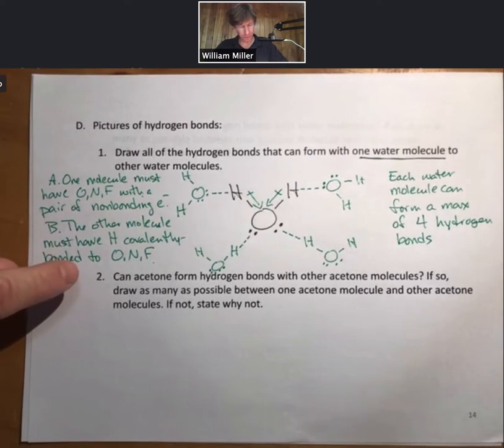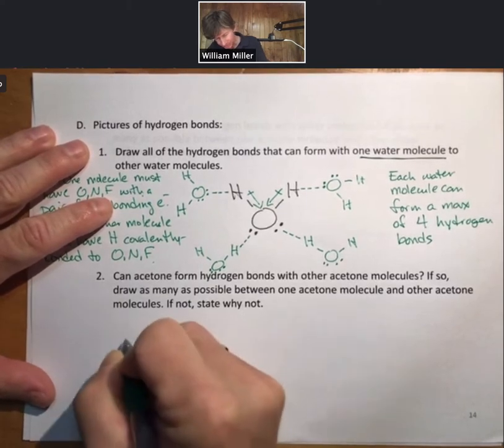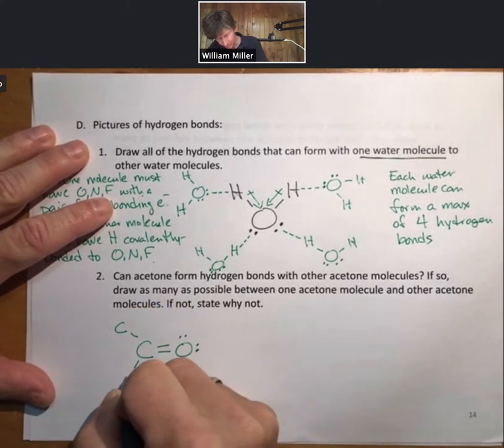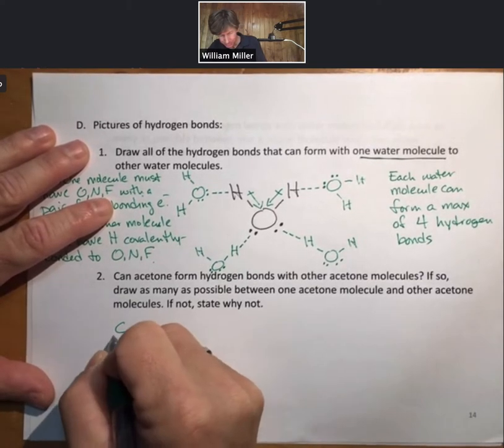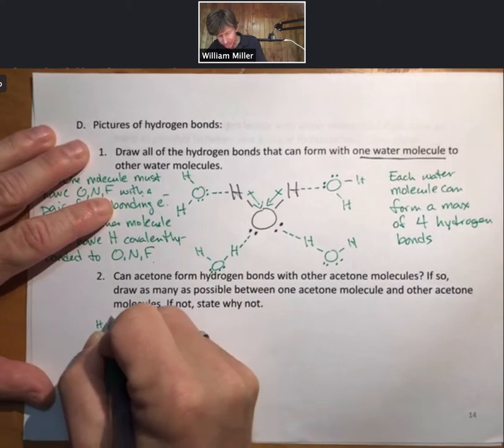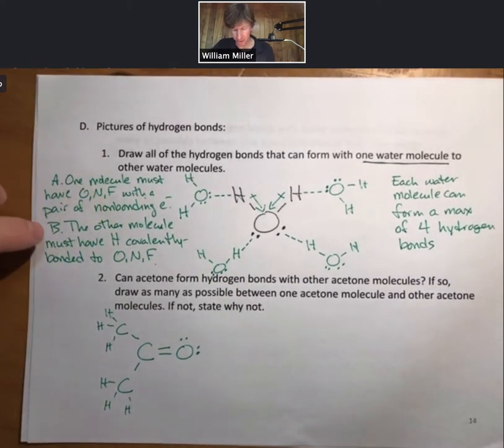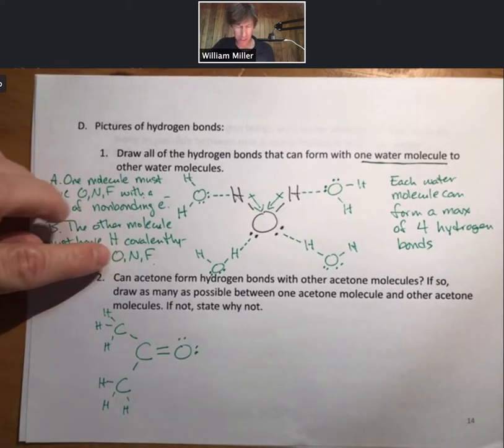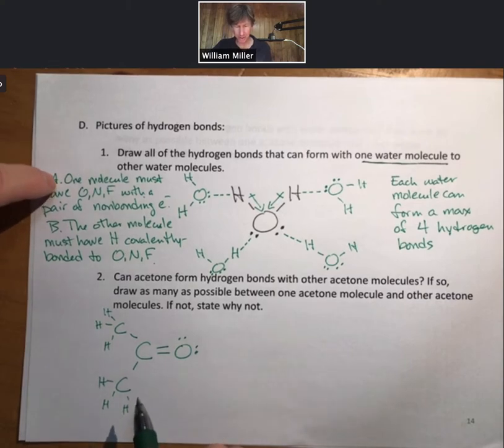Can acetone form hydrogen bonds with other acetone molecules? If so, draw it; if not, state why not. Let me draw you an acetone molecule. It's got three carbons, it's got six hydrogens, but none of those hydrogens are covalently bonded to O, N, or F.